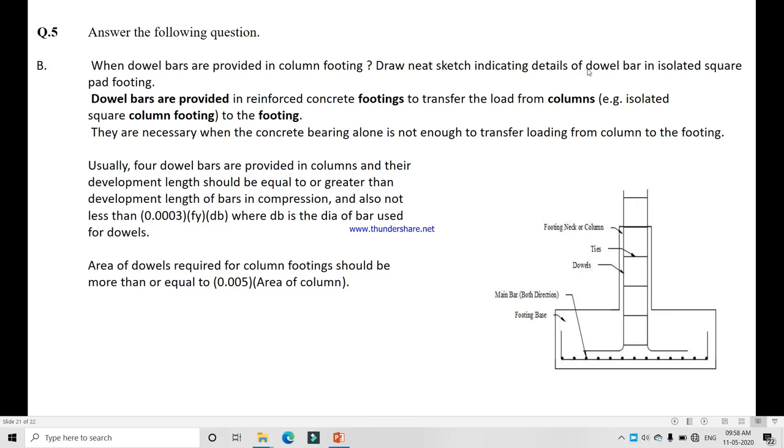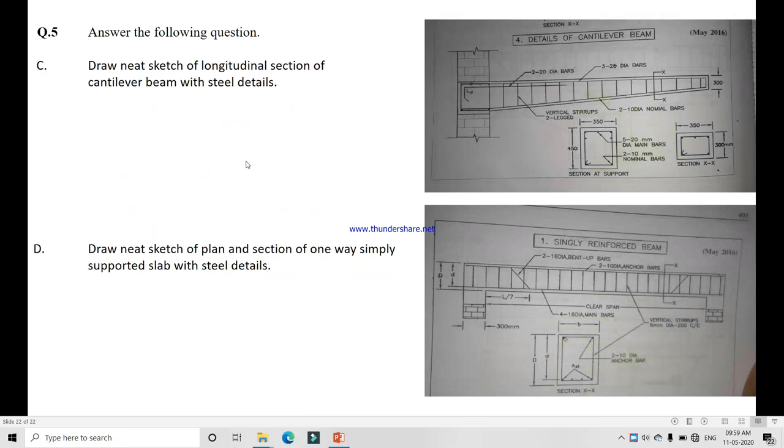Question 5B: When dowel bars are provided in column footing and draw neat sketch including details of dowel bar in isolated pad footing. Dowel bars are provided in reinforcement concrete footing to transfer load from column to the footing. That means dowel bar is an extra bar provided to transfer load from the top part, overall structure weight to the foundation. They are necessary when the concrete bearing alone is not enough to transfer loading from column to footing. I already discussed these things, this is the dowel bar you can see here.